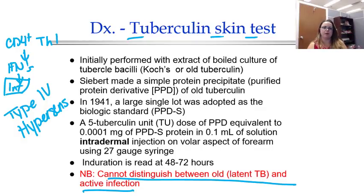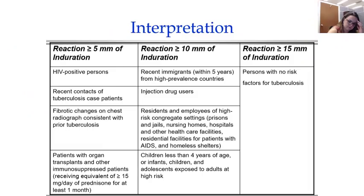The main problem with this is that you cannot distinguish between old TB infection and active infection, because really what this is is a type 4 hypersensitivity response. You're basically looking for a delayed reaction to the tuberculin peptide — waiting for CD4-positive TH1 memory cells to become activated, produce interferons, and produce inflammation. That inflammation is your induration. So if you have a good memory response, you're going to make a huge induration, but that doesn't mean you have active TB.